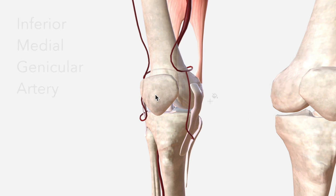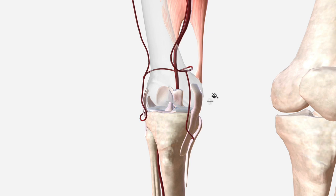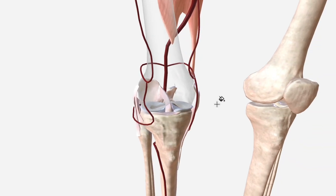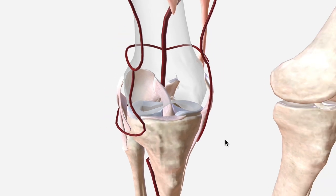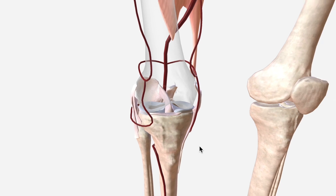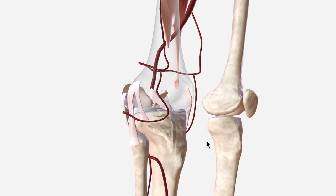We'll remove the patella now to better appreciate the intrinsic features of the knee joint. The inferior medial and lateral genicular supply the anterior ACL and the anterior menisci. The middle genicular supplies the PCL, part of the ACL, and the posterior menisci. The superior medial and lateral genicular supply the superior patella and the bone and synovium over which they pass.